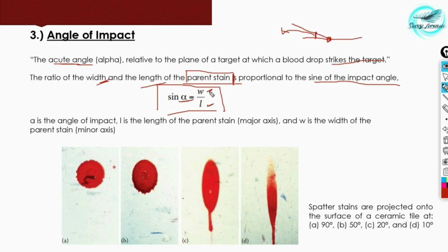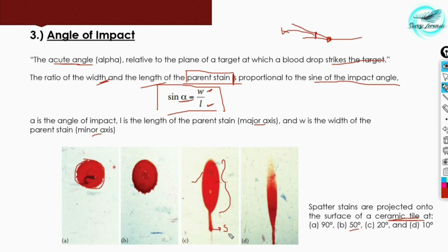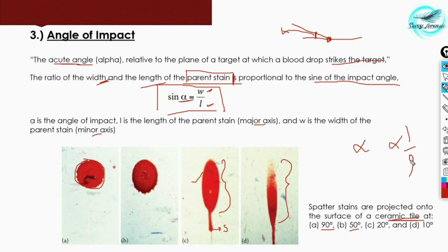You can see the formation of various spatter stains at certain angles. At 90 degrees, the stain formed is completely circular. At 50 degrees, it is slightly distorted. At 20 degrees, it becomes a clearly elliptical pattern where you can also see the satellite stain. As the angle decreases, the stain becomes more elongated and elliptical. So the angle of impact alpha is inversely proportional to the length of the stain.